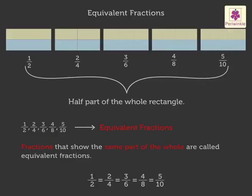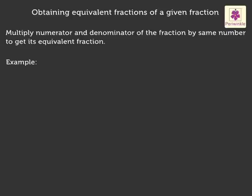Let us see how we can obtain the equivalent fractions of a given fraction. When we multiply the numerator and the denominator of a given fraction by the same number, we obtain its equivalent fractions. Now, let us solve an example to understand it in a better way. Find the equivalent fractions of three-fourths.